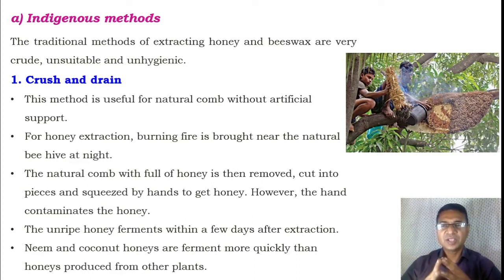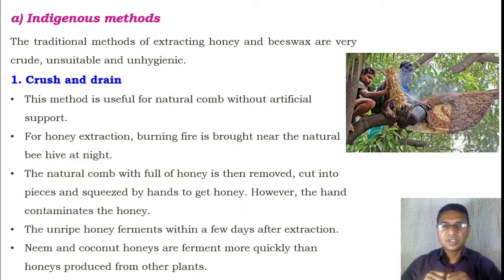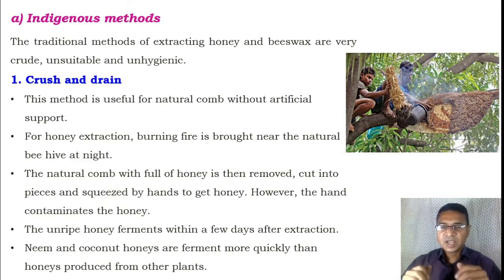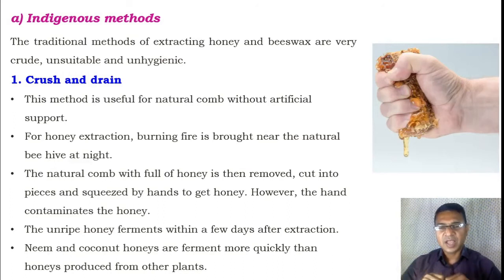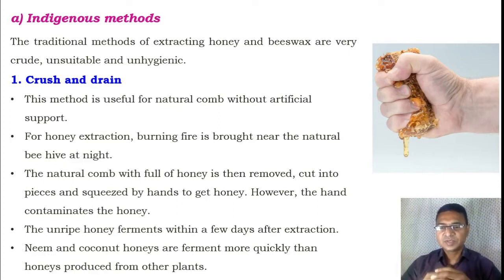The first indigenous method is the crush and drain method. This method is useful for natural combs without artificial support. For honey extraction, people use a burning fire brought near the natural comb at night. The honeycomb, which is full of honey, is then removed by the people, cut into small pieces, and squeezed with the hands to get the honey. However, the hands also contaminate the honey, and the unripe honey ferments within a few days after extraction.